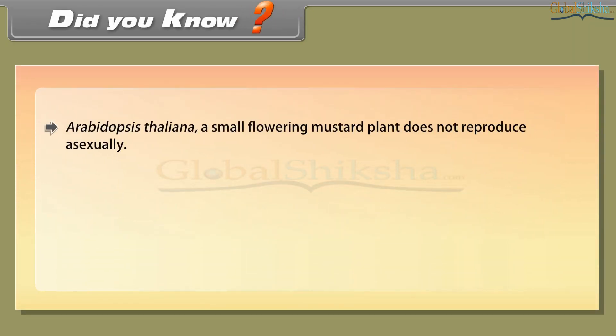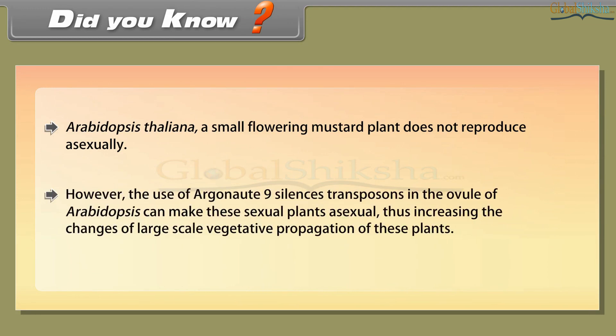Arabidopsis thaliana, a small flowering mustard plant, does not reproduce asexually. However, the use of Argonaute 9, which silences transposons in the ovule of Arabidopsis, can make these sexual plants asexual, thus increasing the chances of large-scale vegetative propagation of these plants.